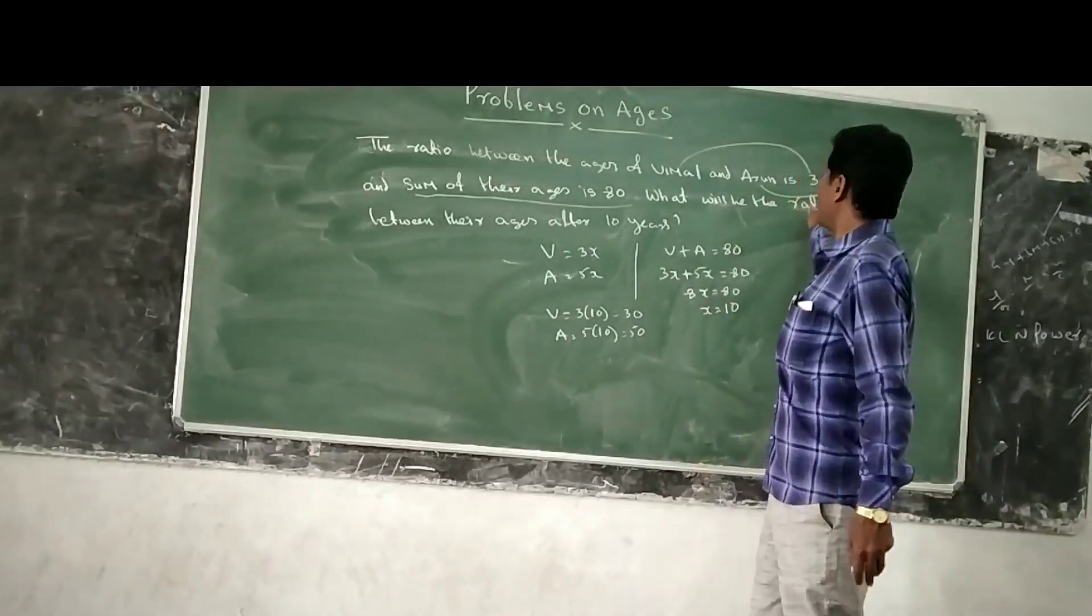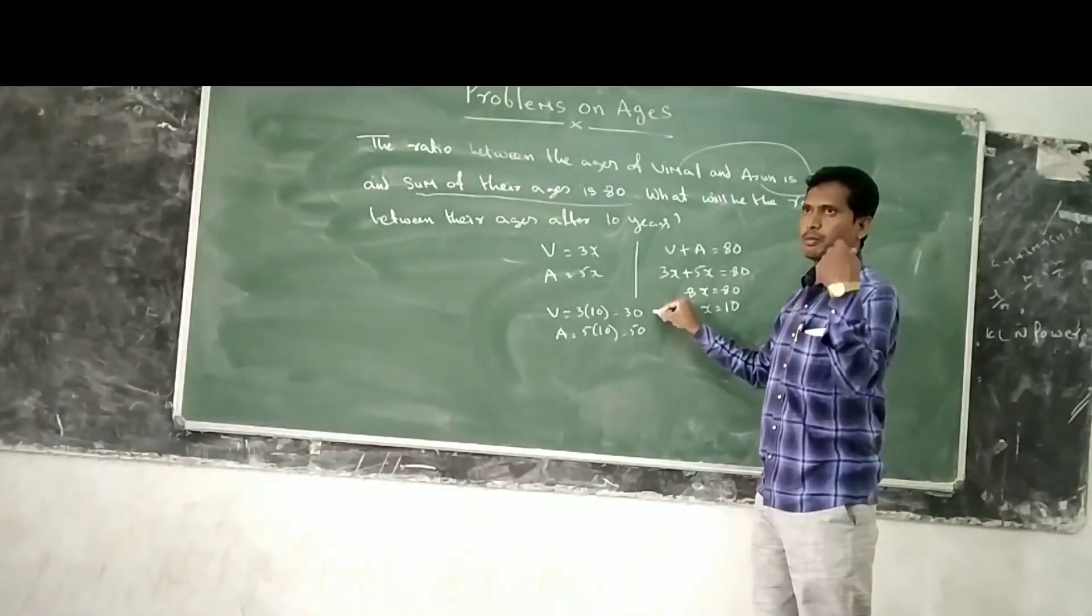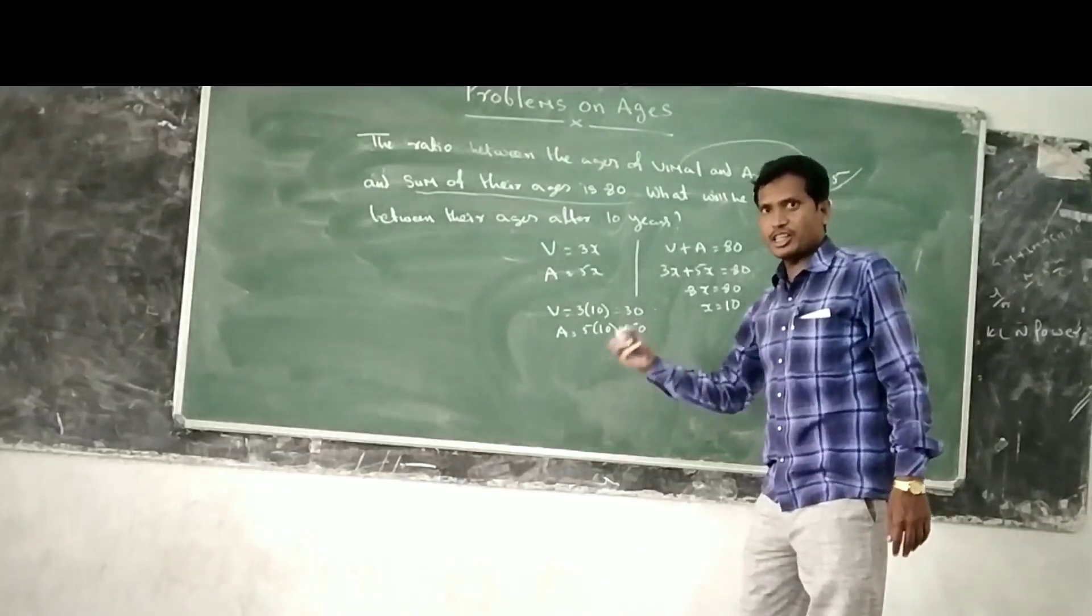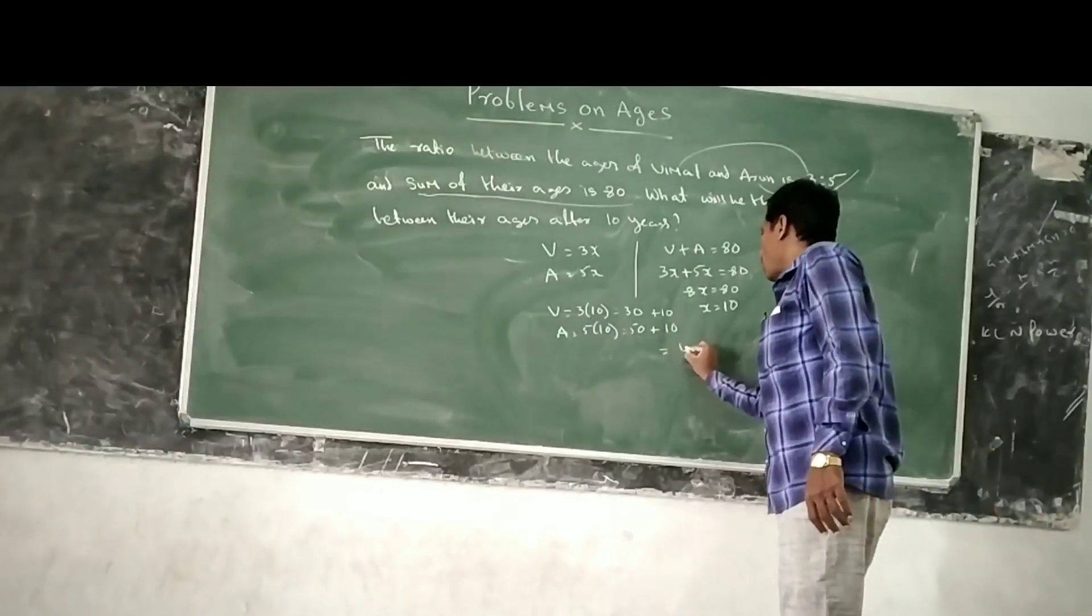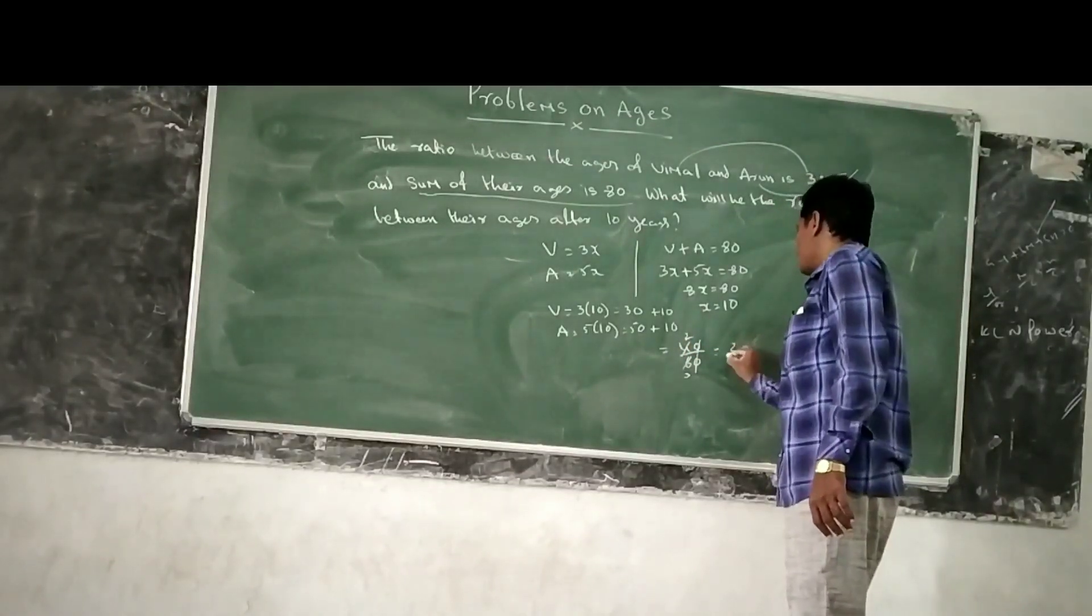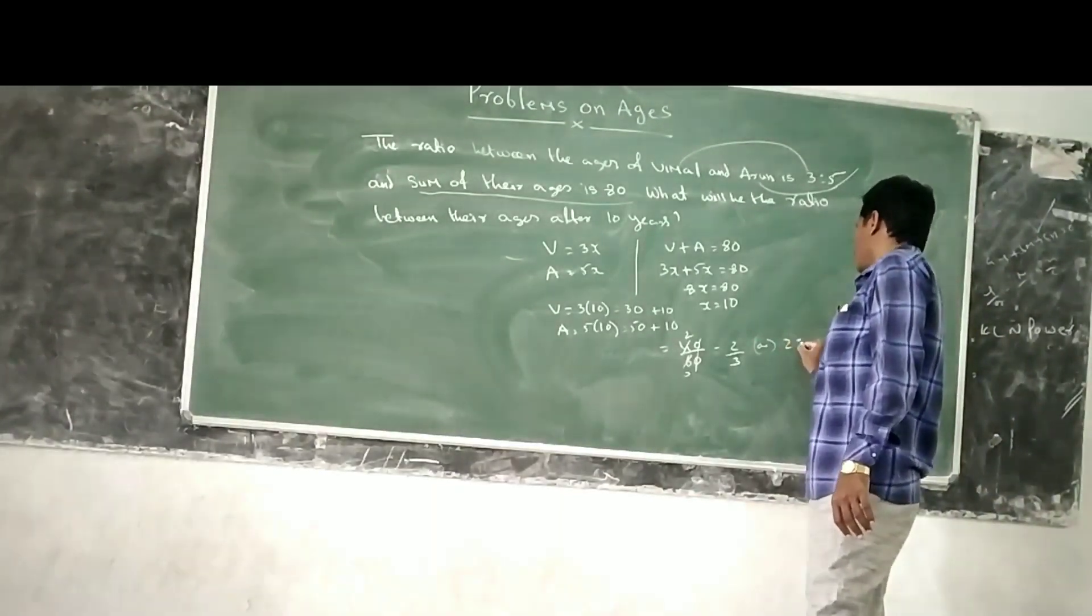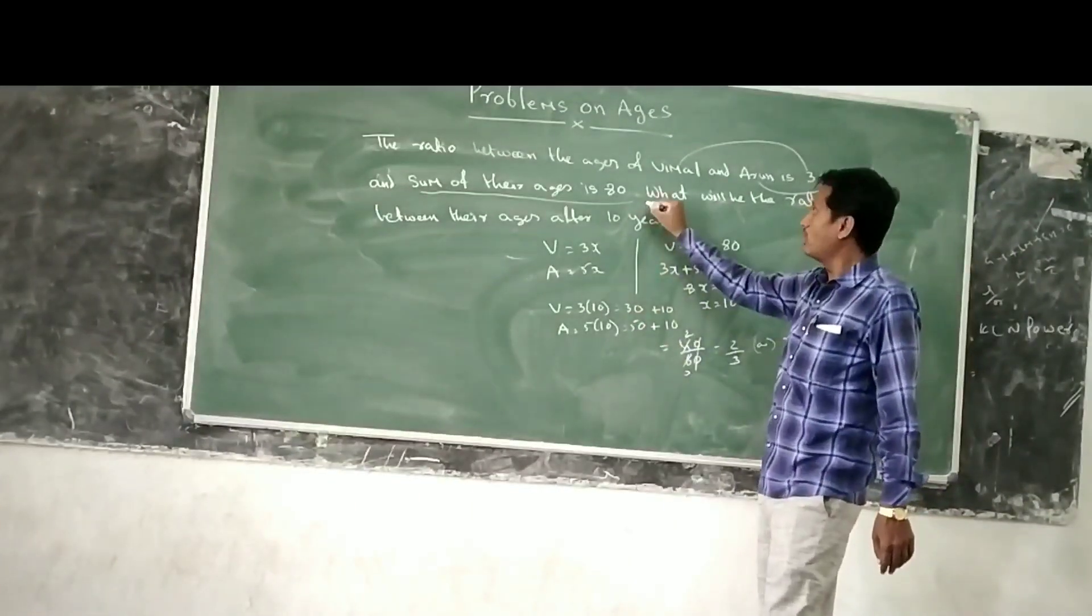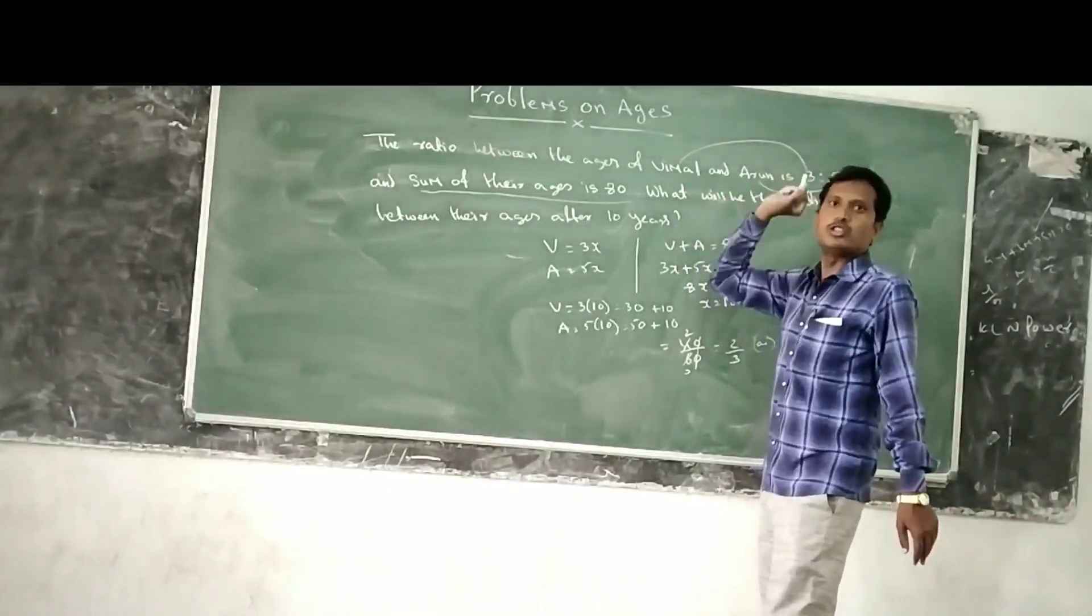But they can ask, what will be the ratio between their ages after 10 years? The present age of women is 30. So, plus 10 equals 40. Plus 10 equals 60. The ratio is 40 to 60, which is 2 to 3. This is the way we have to do this problem. Ratio and sum of the ages is given. And the difference of them is also given. We have to do this method.